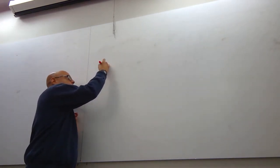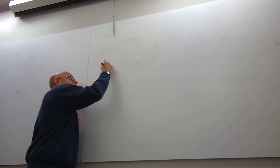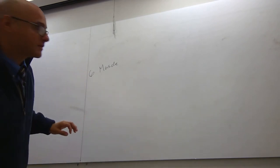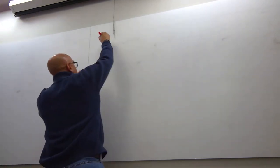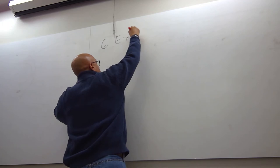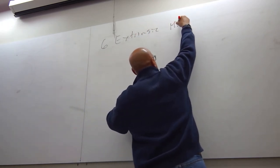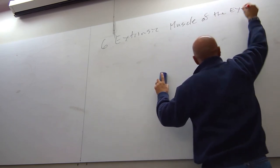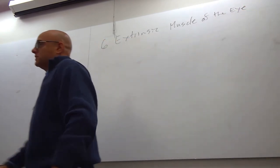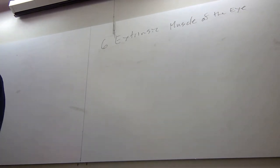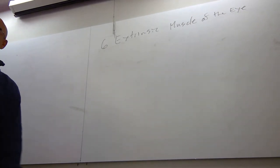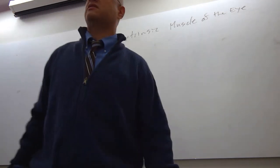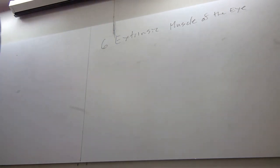So, let's talk about the six extrinsic muscles to the eye. Does everyone agree that we have only three cranial nerves that are dedicated to pure sensation, special sensation?